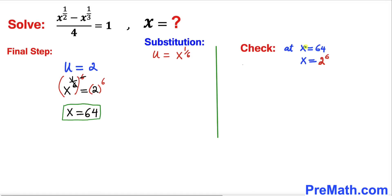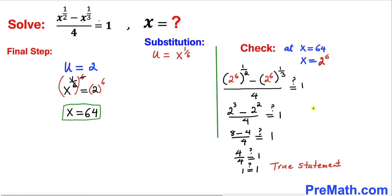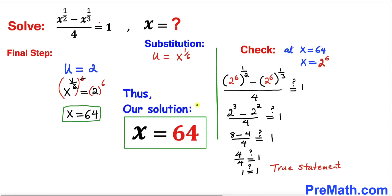Let's check our solution at x equals 64, which is 2^6, by plugging the value back into the original equation. After checking, the left-hand side indeed equals the right-hand side, confirming a true statement. So our solution is x equals 64. Thanks for watching — please don't forget to subscribe for more videos.